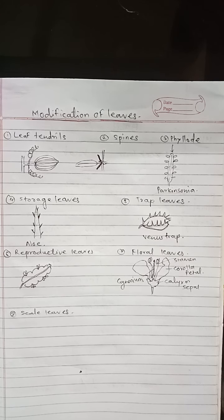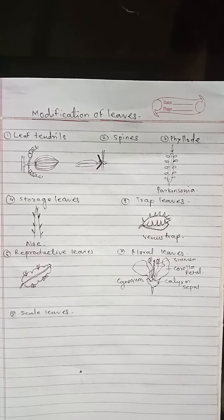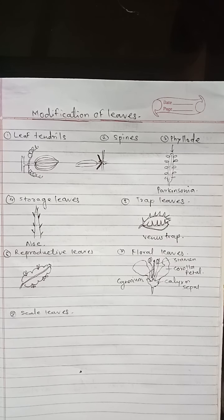The first type is leaf modification as tendrils. In many weak-stem plants, the leaves are modified into slender, wiry and coiled structures called leaf tendrils. The tendrils may be formed by the entire leaf or a part of the leaf.